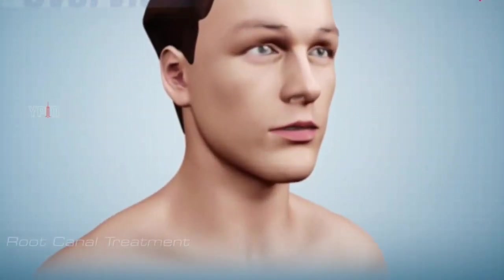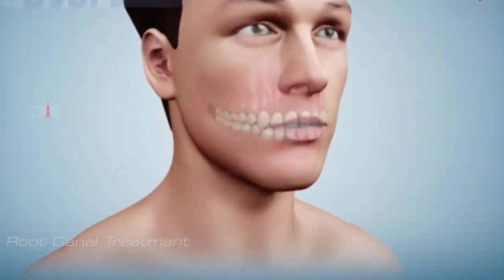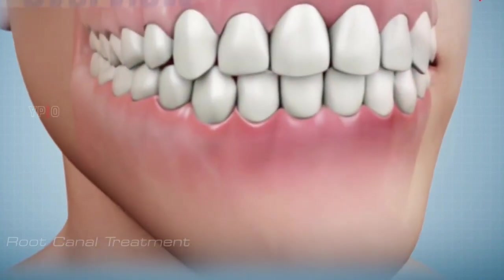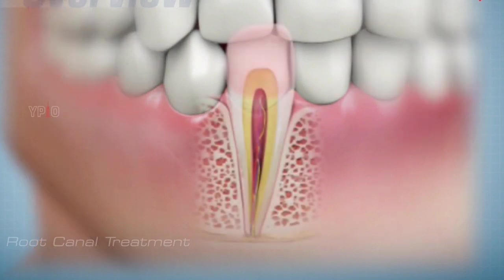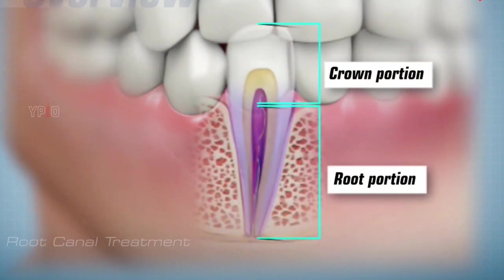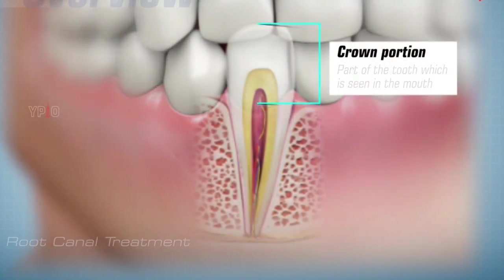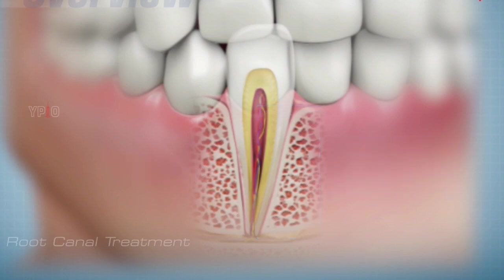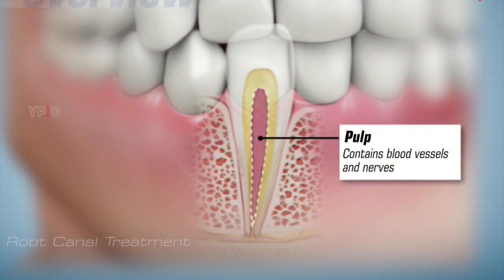To understand about root canal treatment, you need to know the basic structures of the tooth. A tooth has two main parts: a crown portion and a root portion. The crown is the part of the tooth which is seen in the mouth, and the root is the part inside the jaw bone. Inside the crown and root, there is a soft core of tissue known as pulp that contains blood vessels and nerves.